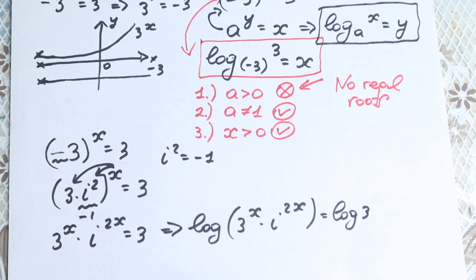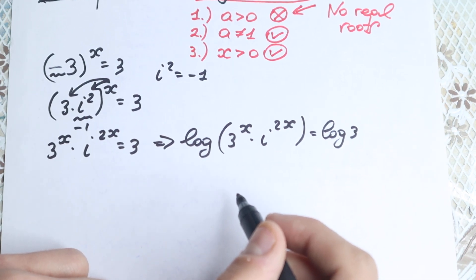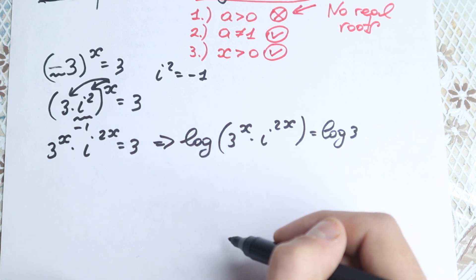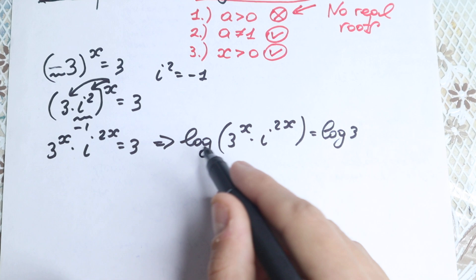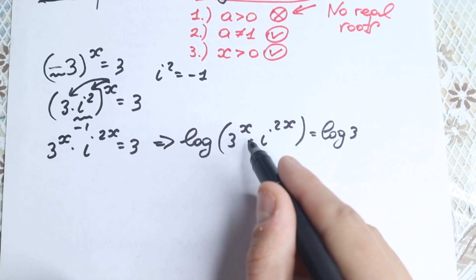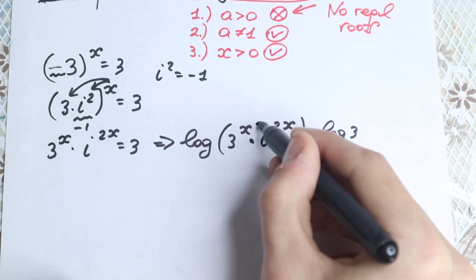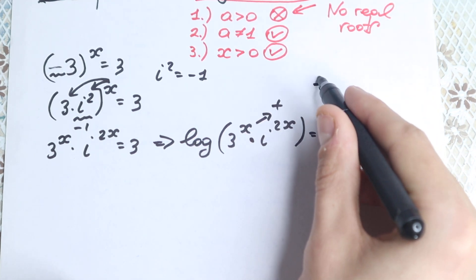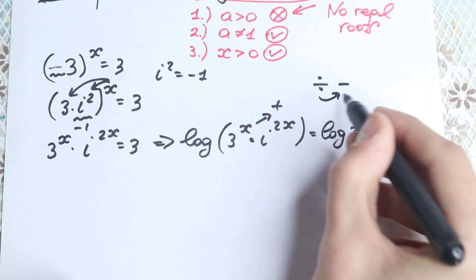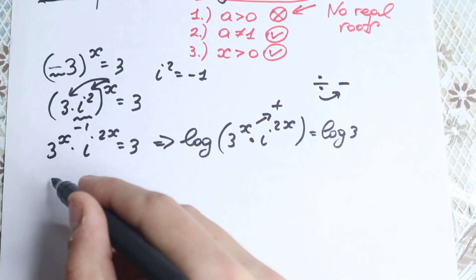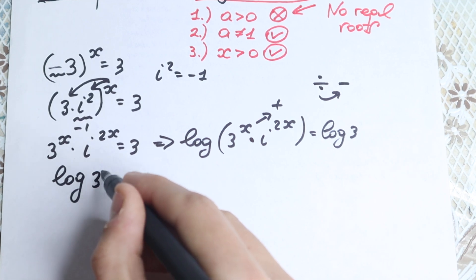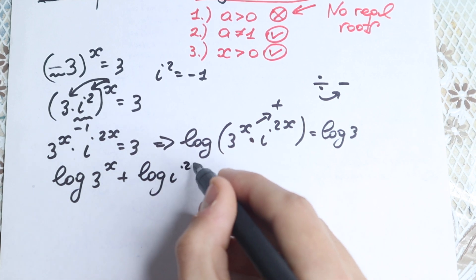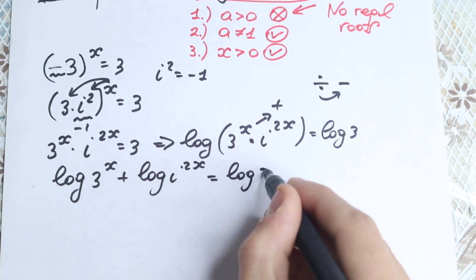Now we apply log to both sides. On the left-hand side we have log of (3^x · i^(2x)), and on the right-hand side log of 3. Using the log product rule — log(a·b) = log(a) + log(b) — we split the left side into log(3^x) plus log(i^(2x)), equal to log 3.